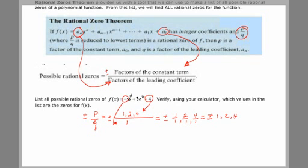That's the list. Now that's actually 6 numbers, the positive versions and the negative versions. We could try using synthetic division to find out which ones from this list would work in that polynomial function.